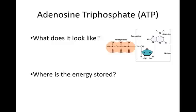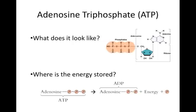The energy in ATP is stored in the bonds between the phosphate groups. When these bonds are broken, usable energy is released, leaving a molecule of ADP, or adenosine diphosphate, and an inorganic phosphate.